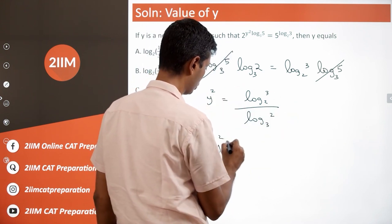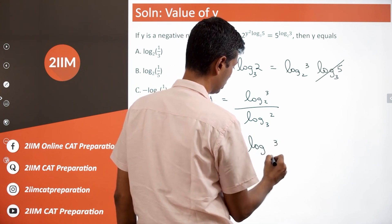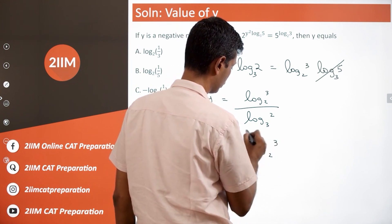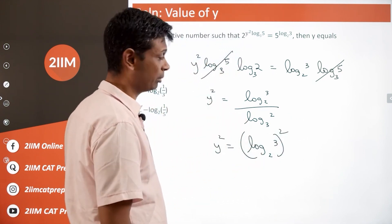This is nothing but y square equals log 3 to the base 2 whole square. Or y should be log 3 to the base 2.